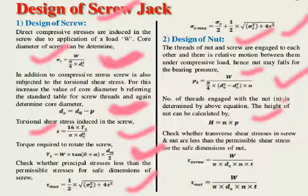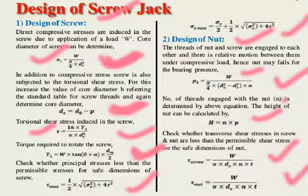Next, check whether the transverse shear stresses in the screw and nut are within permissible limits. Calculate τ_screw and τ_nut using their respective formulas — with known values of n, t, dc, and W. Compare these computed values with allowable values; if less, the design is safe; if greater, the design is not safe.